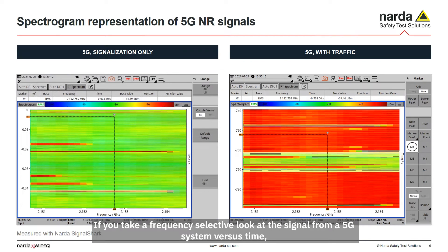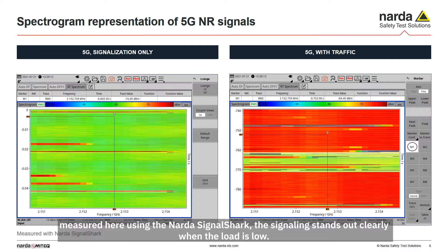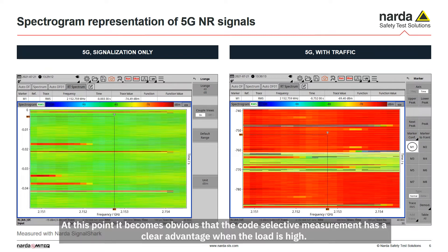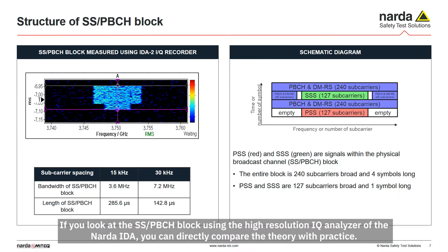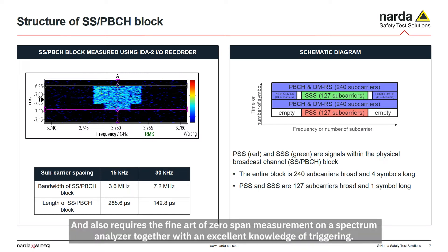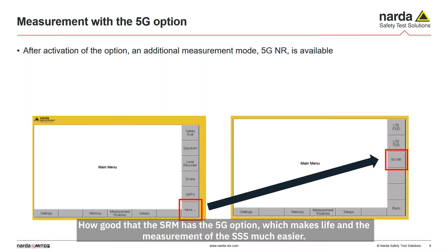If you take a frequency-selective look at the signal from a 5G system versus time, measured here using the NADA signal analyzer, the signaling stands out clearly when the load is low. However, if the service is heavily used, the signaling can only be separated from the payload signal with difficulty — making it obvious that the code-selective measurement has a clear advantage at high load. If you look at the SS-PBCH block using the high-resolution IQ analyzer of the NADA IDA, you can directly compare theory with practice. The SS-PBCH part can be recognized and measured using markers, but that only works at low load and requires the fine art of zero-span measurement on a spectrum analyzer together with an excellent knowledge of triggering. The SRM 5G option makes measurement of the SS-PBCH much easier.